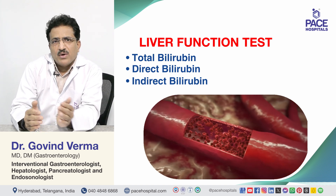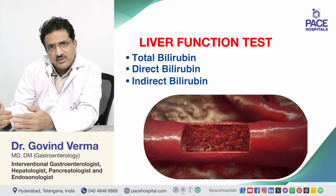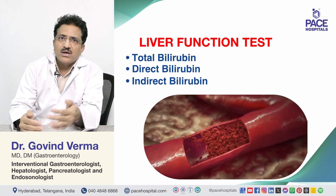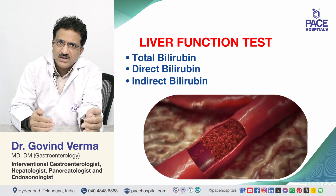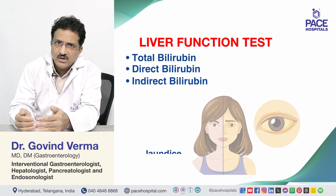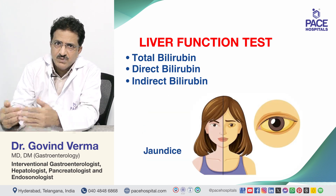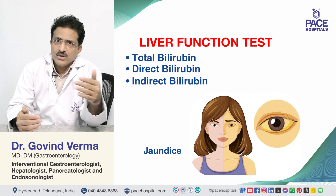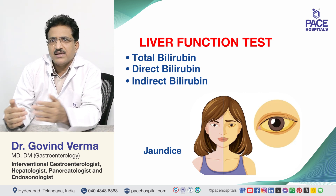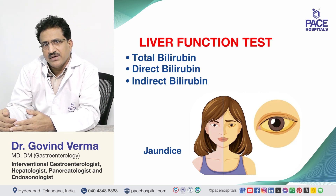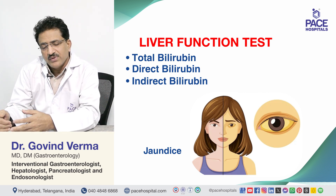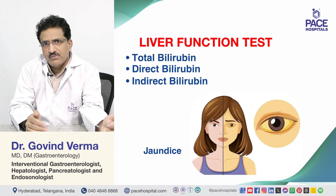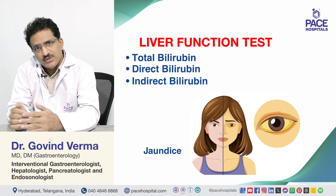Direct bilirubin is water soluble, so it gets excreted through the urine. Whenever you do a urine examination in a patient with jaundice, if you see bilirubin in the urine, that means conjugated bilirubin is being produced in excess and is getting excreted through the urine. Indirect bilirubin never gets excreted through the urine because it is water insoluble.